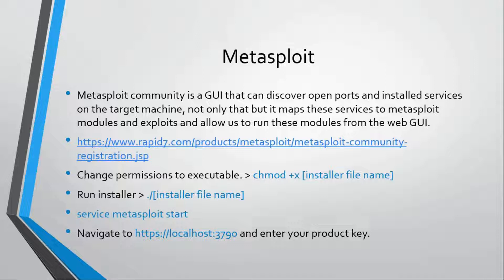In Metasploit Community we don't have to use Zenmap — we can just scan our target using Metasploit, and it is going to discover the open ports for us, show us the details of the installed services, and also search for any exploits available in Metasploit. It will show us which exploits we can use to exploit those vulnerabilities, and then we can gain access to our target simply by selecting the exploits in the Metasploit Community interface.